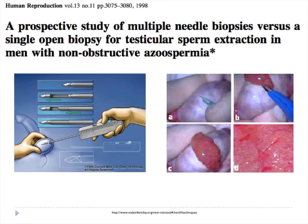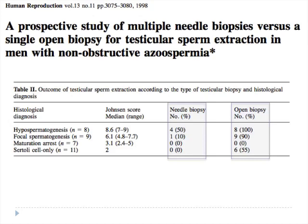In a study of 35 consecutive patients with non-obstructive azoospermia who underwent both TESE and needle biopsies, there was a higher rate of sperm retrieval in the TESE group compared to percutaneous biopsy — 63% in the TESE group compared to 14% in the multiple needle biopsy group.